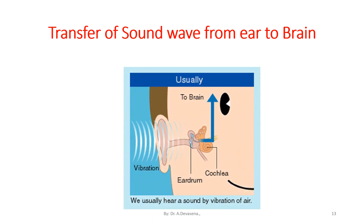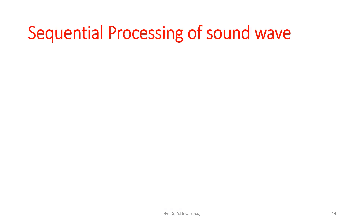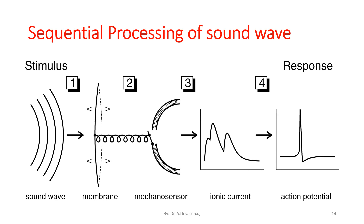The vibration created outside the ear is passed to the inner portion of the ear, hits the eardrum, then passes to the cochlea, and from the cochlea it is passed to the brain. We usually hear a sound by vibration of the ear. See the sequential processing of the sound wave.